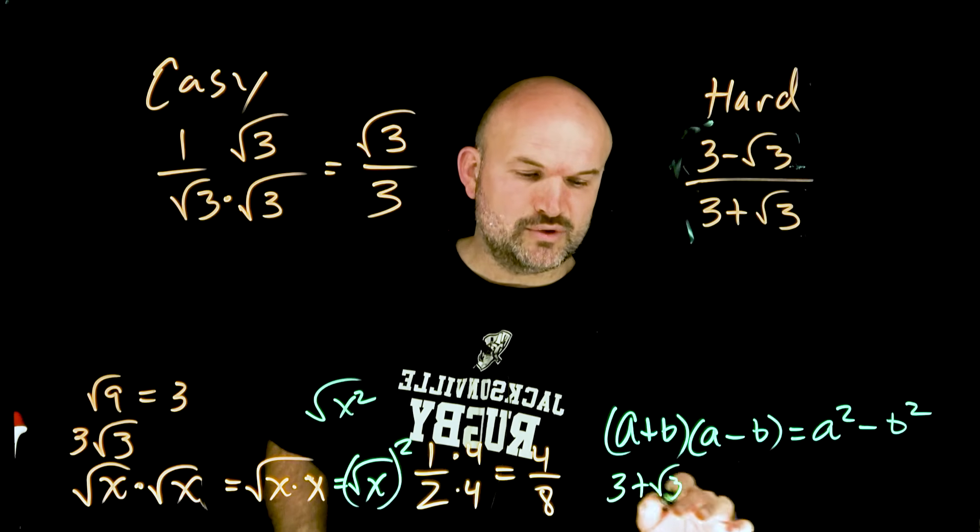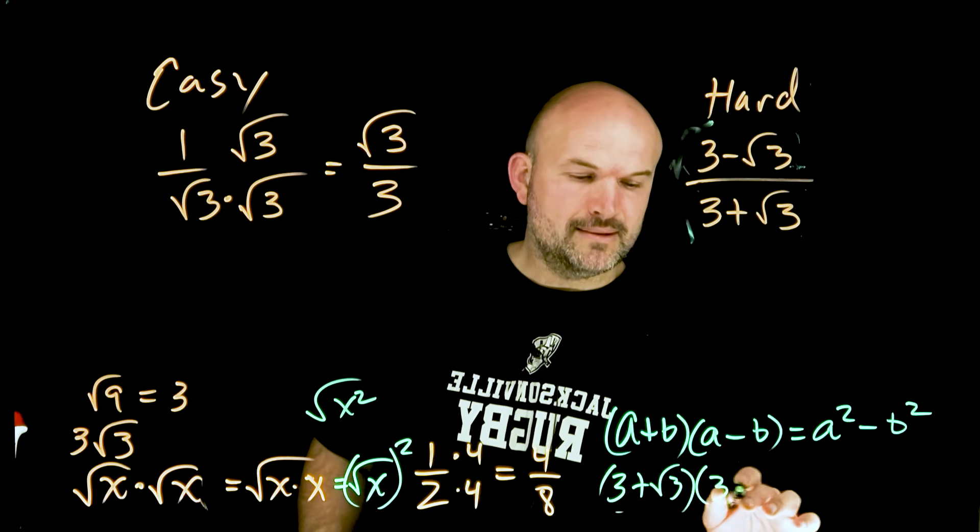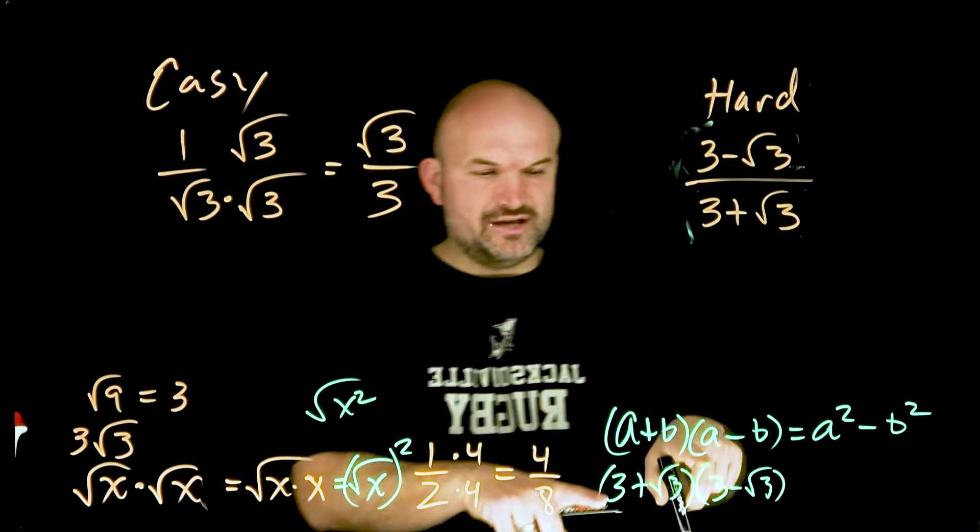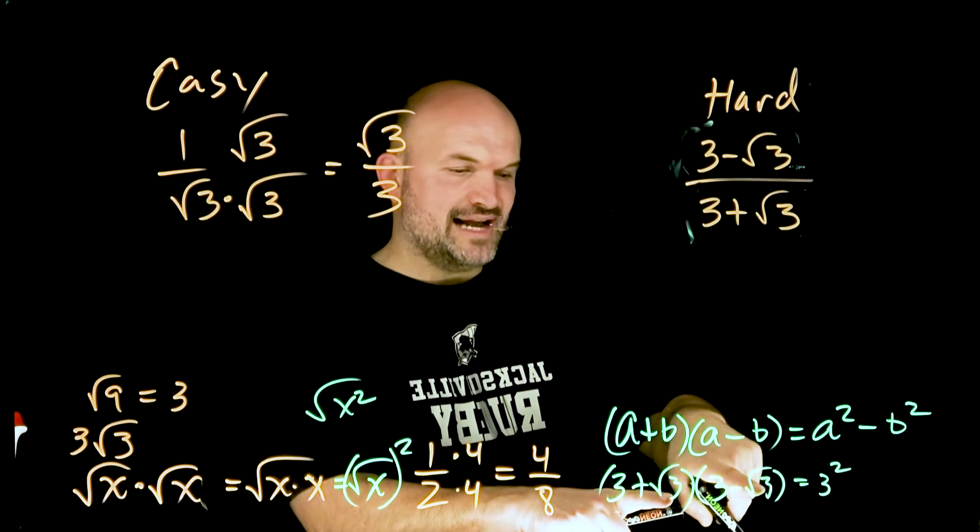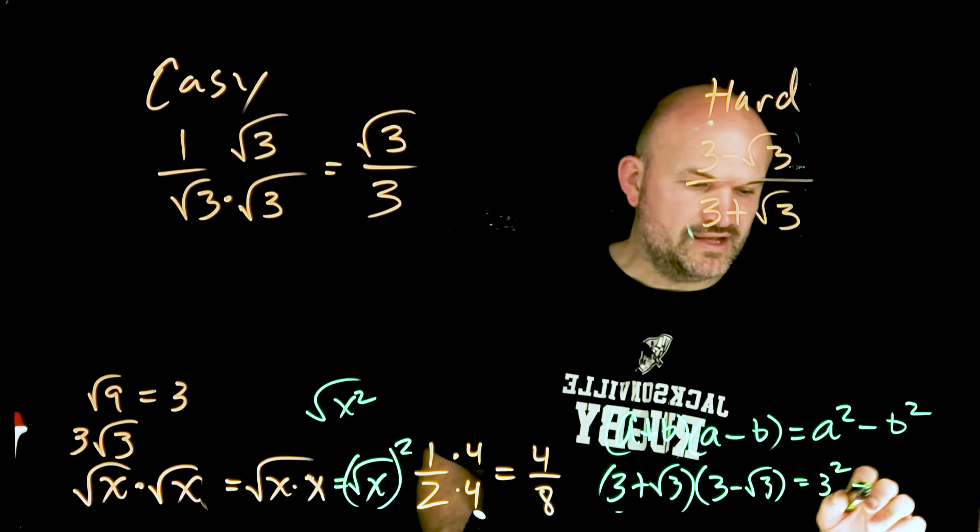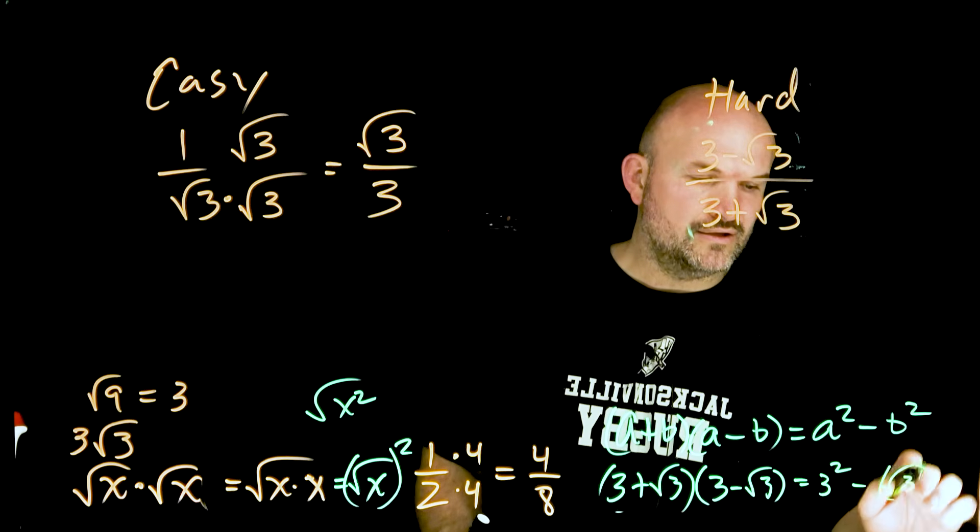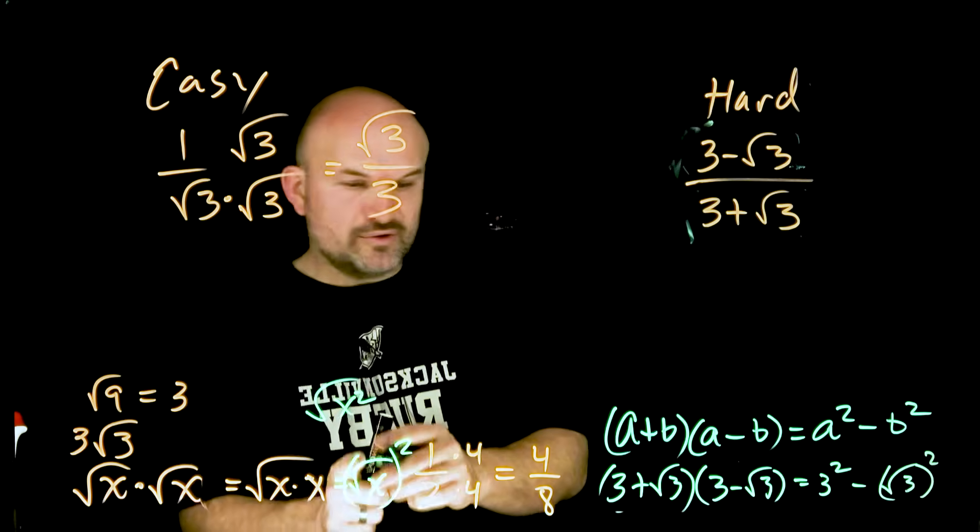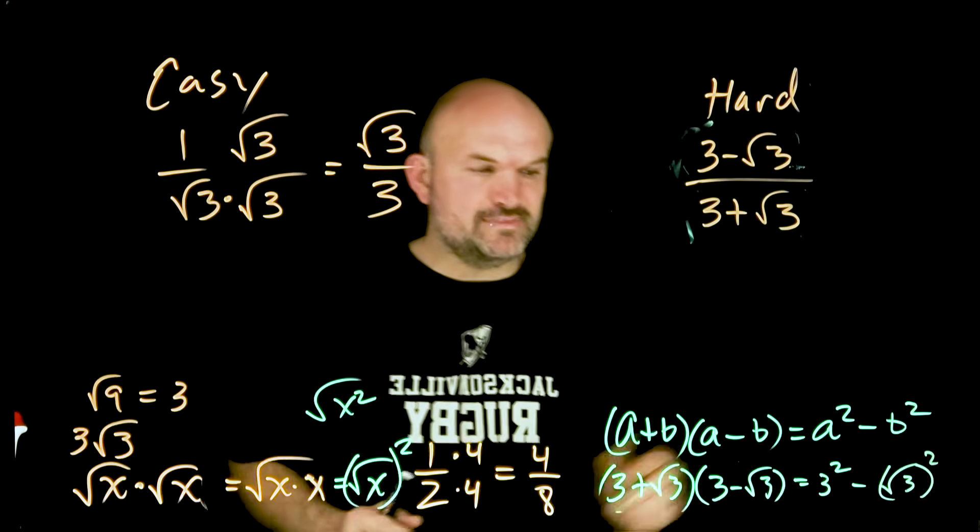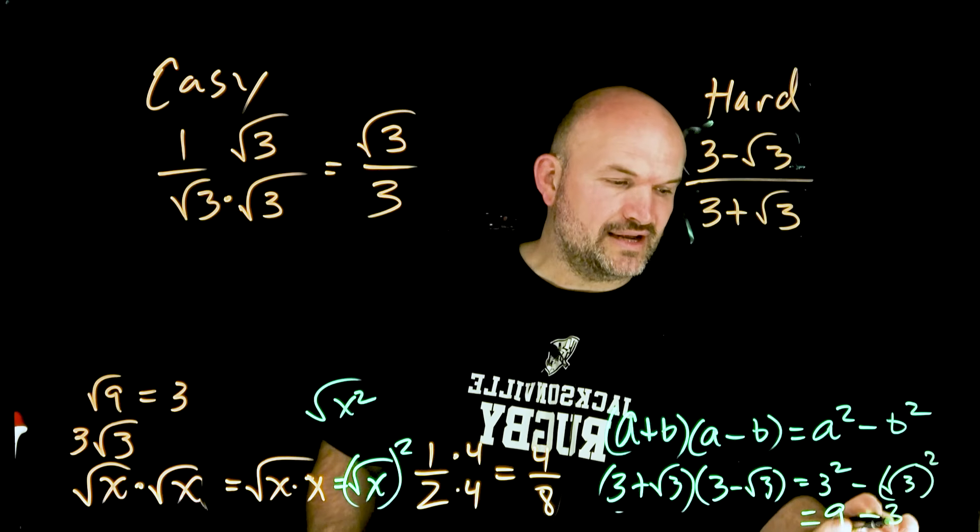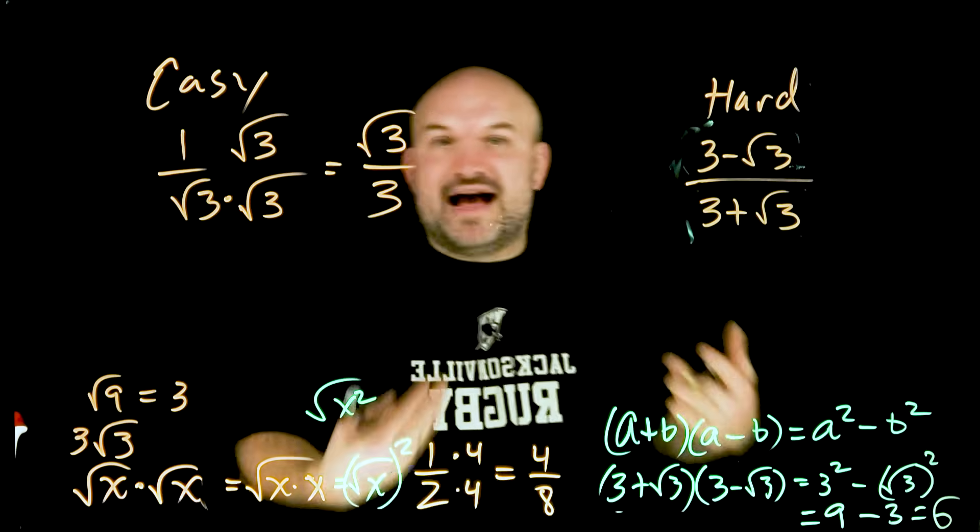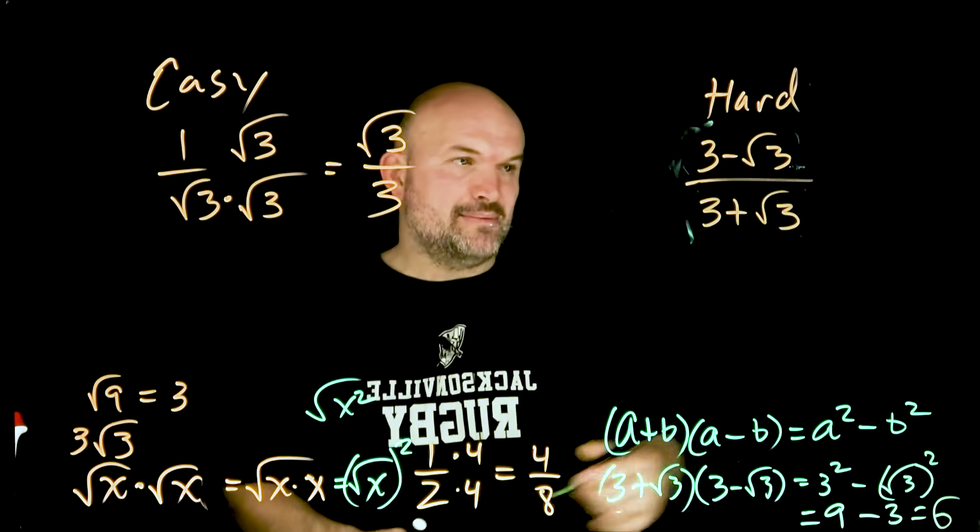So if I have 3 plus the square root of 3, and then 3 minus the square root of 3, well, I look at my first term a, and that's going to be a 3 squared. And then I look at my second term, which is going to be a square root of 3. So it's going to be minus square root of 3 squared. Again, the square root of something squared is just going to be your term 3. So now what I'm going to get is a 9 minus a 3, which equals a 6. I no longer have a value of a radical in my denominator.